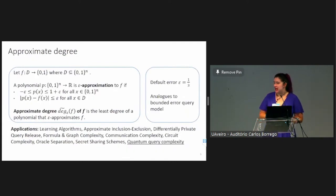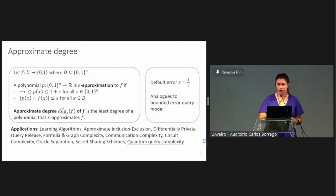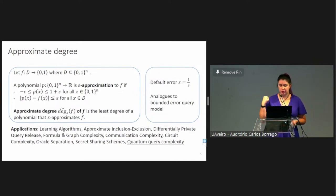Another model that we're going to look at is approximation by polynomials. We have a boolean function defined on a subset of a boolean hypercube. We're going to say that a real-valued polynomial P is an epsilon approximation to that function F if P is bounded on the whole hypercube and is epsilon close to the value of the function on the domain. And we say that the epsilon approximate degree of F is the least degree of a polynomial that epsilon approximates F. By default, you should think that epsilon is one-third, and this is analogous to the bounded error query model I talked about earlier.